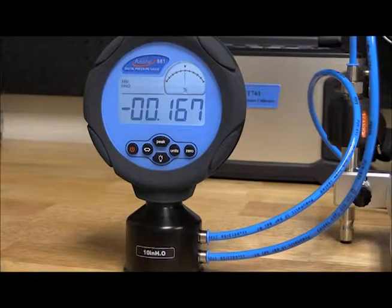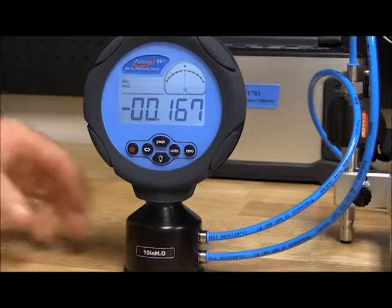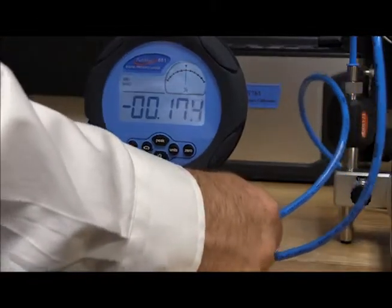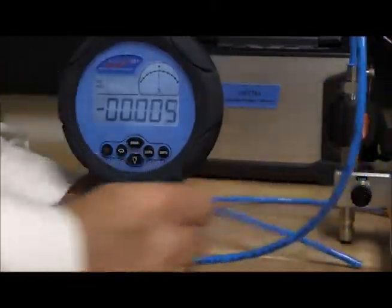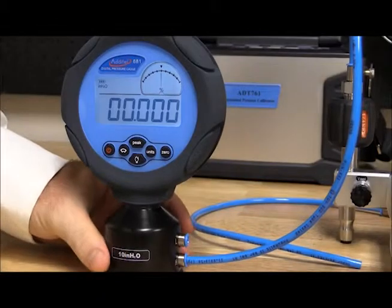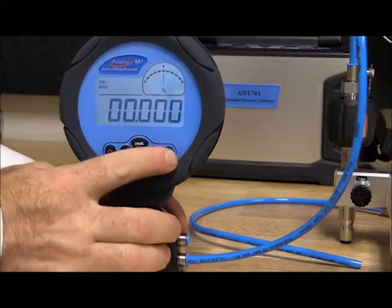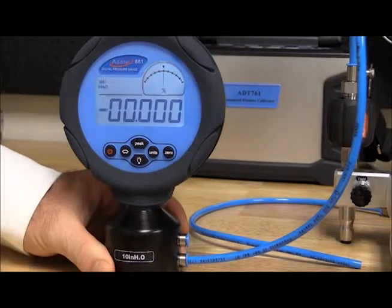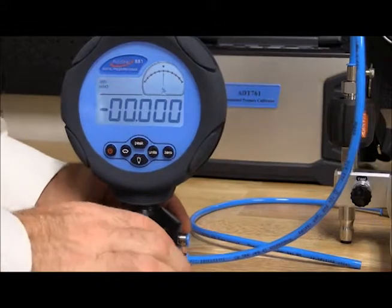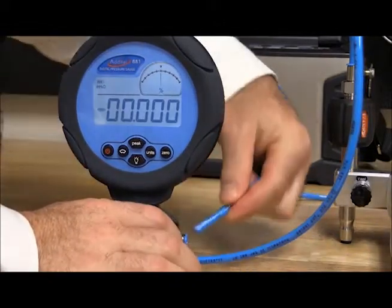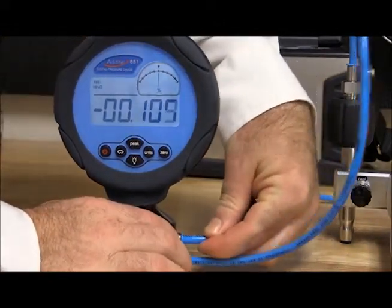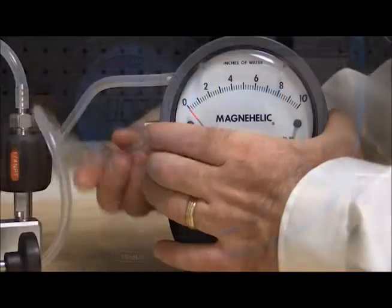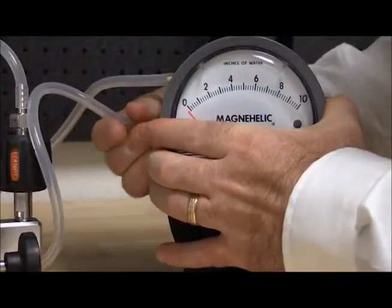Recording the zero point may vary depending on the type of DUT. If the DUT is a digital gauge, then keep the reference gauge and the DUT reference ports connected together and zero both gauges. In this example, I have an analog gauge, so I will disconnect both the reference ports and leave them open to atmosphere to zero the 681 reference gauge. After recording the zero, we will connect both reference ports together and proceed through the calibration.